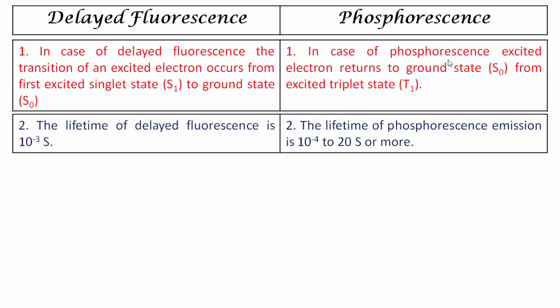The second point of distinction is lifetime. The lifetime of delayed fluorescence is 10 raised to minus 3 seconds, whereas for phosphorescence it is 10 raised to minus 4 to 20 seconds, or in some cases more than that. This means phosphorescence has a longer lifetime.